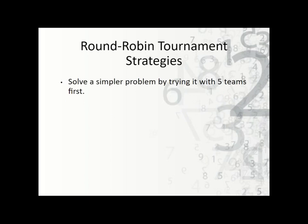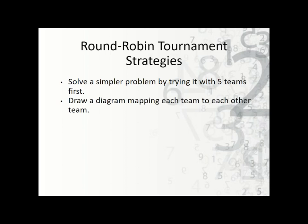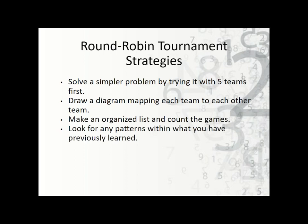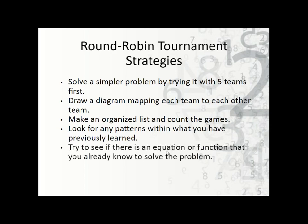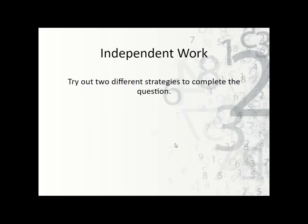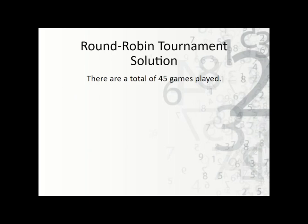A couple of strategies to try. Number one: solve a simpler problem — this could end up being a lot of games, so maybe start with five teams instead of 10 and see if there's a pattern. Draw a diagram — start with 10 and draw lines to the other teams. Make an organized list and count the games. Look for any patterns you've previously learned from any math class. Try to see if there's an equation or function you already know. You may not be able to use all of these strategies — these are just some to try. Try out two different strategies to complete the question.